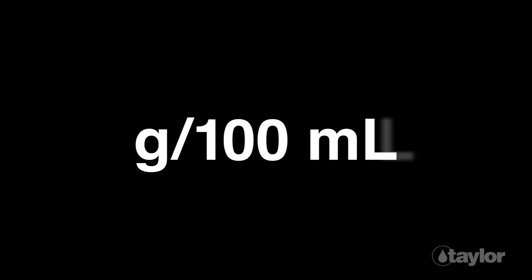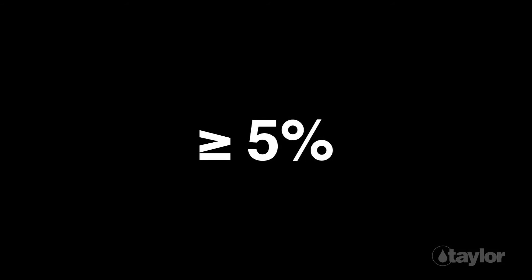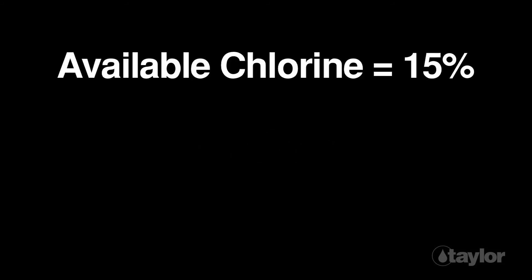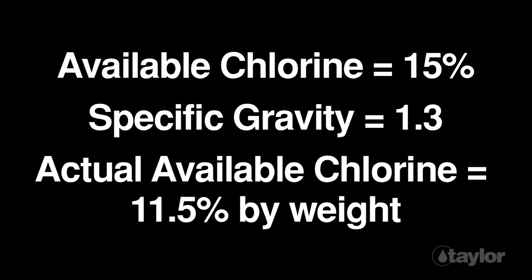Note: chlorine concentration is determined as grams per 100 milliliters. For less concentrated solutions — less than five percent — this is approximately equal to the actual percent available chlorine. For concentrated solutions equal to or greater than five percent, divide the answer by the specific gravity and record as actual percent available chlorine. For example, if 15 percent available chlorine is calculated and the specific gravity is 1.3, the actual percent available chlorine is 11.5 percent by weight.